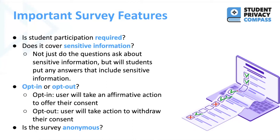Next, will the survey be opt-in or opt-out? In an opt-in situation, before giving a survey, that user — typically the guardian or parent — will have to take an affirmative action to offer their consent before their child is given that survey. In an opt-out situation, all students can be given the survey unless that parent has taken action to withdraw their consent. Lastly, will students be putting their names on the survey, or can their answers be otherwise identified, or will the survey be anonymous?